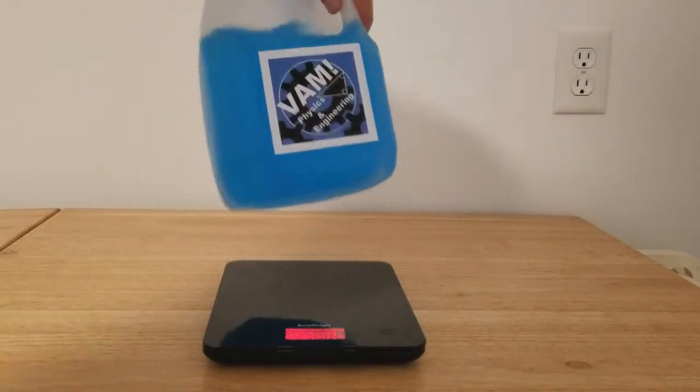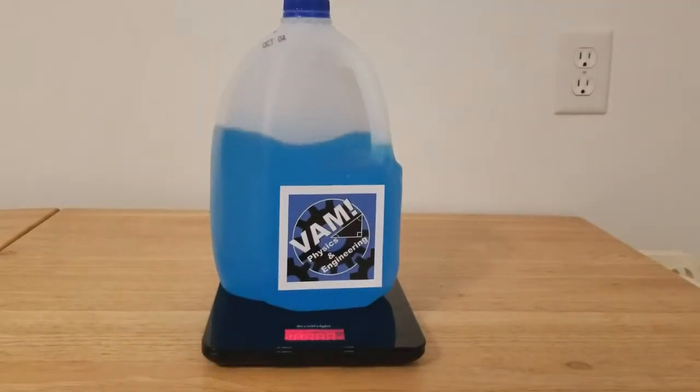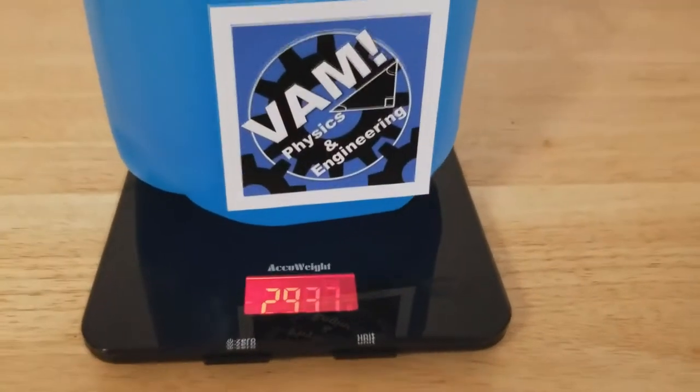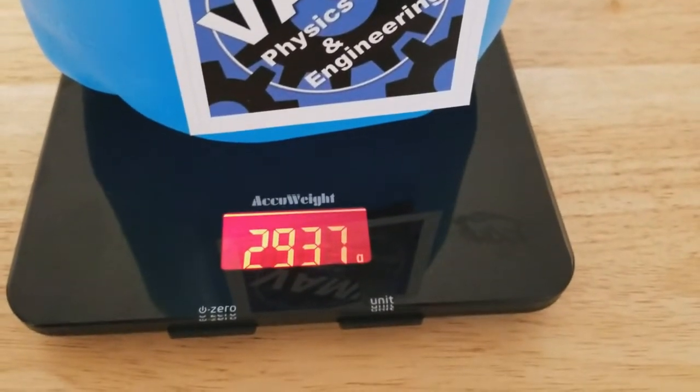In this problem, we have a gallon jug filled partially with water. We take a measurement of the mass of the jug and end up with a mass of 2.937 kilograms.